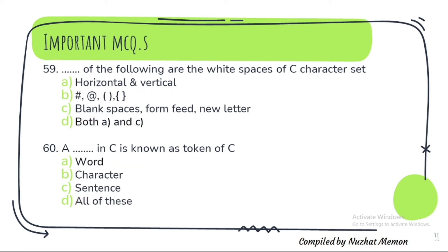Question 59: Which of the following are the white spaces of C character set? It is both A and C — that is horizontal and vertical tab, blank spaces, form feed and new line. These are the white spaces of the C character set. Question 60: A word in C language is known as token of C.